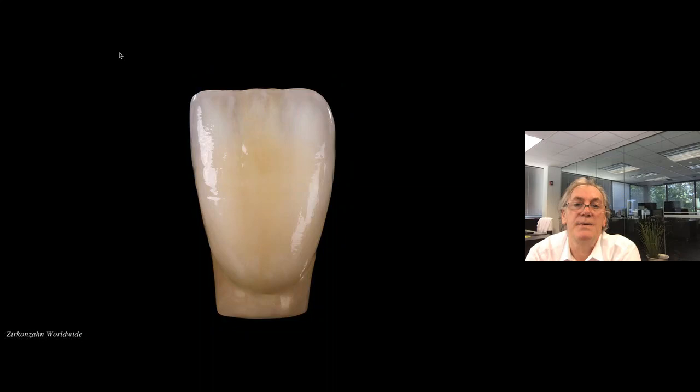Once this element gets baked, we will finish off whatever we need to do by enhancing these colors with our stains and glazes. As you take a look at this tooth, you can see the combination of all the elements that we spoke about today.